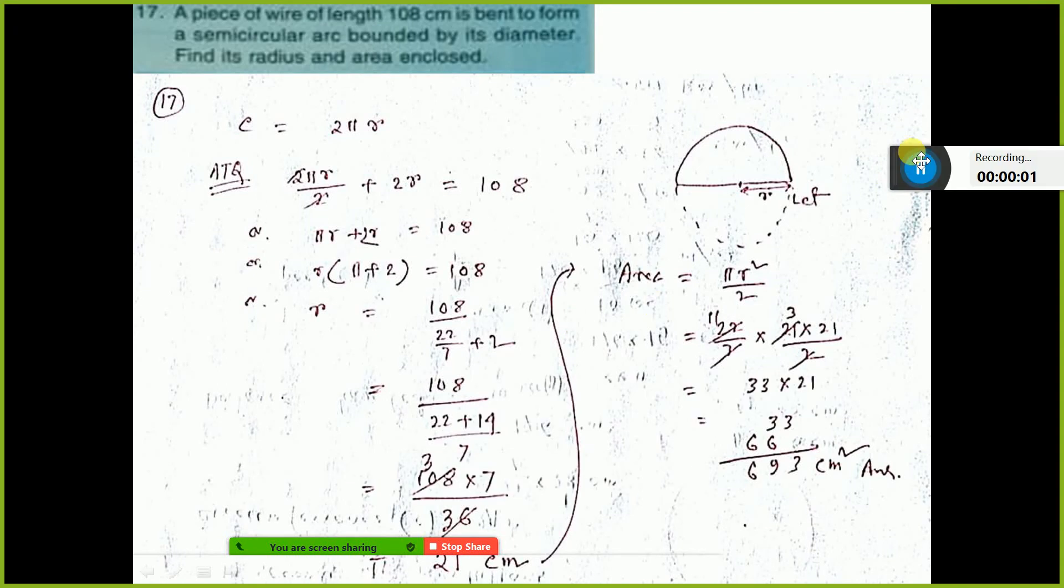Let us do number 17 now. A piece of wire of length 108 cm is bent to form a semicircular arc. So this is the thing.